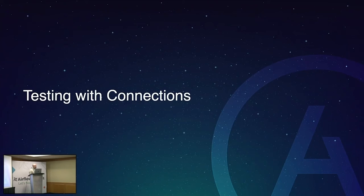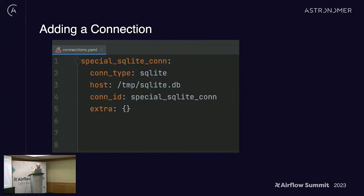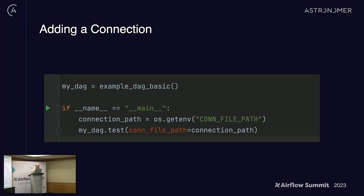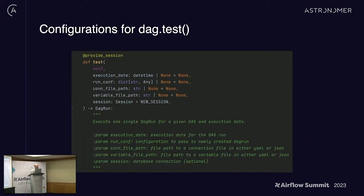Testing in Airflow wouldn't have a lot of value if you couldn't add your Airflow connections. To add your connections, you can create a connections.yaml file with SQLite, Snowflake, or any connection you would use in Airflow. What's really cool is that the dag.test function allows you to point to a connections file and a variables file, so you can plug in connections that will override any existing connections in the Airflow DB for the duration of that test. This is critical if you maybe want to locally run queries against your dev Snowflake — just pass in the Snowflake credentials and on your local machine you are testing a full Snowflake DAG.